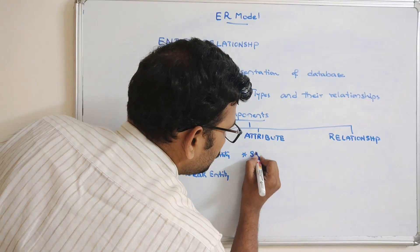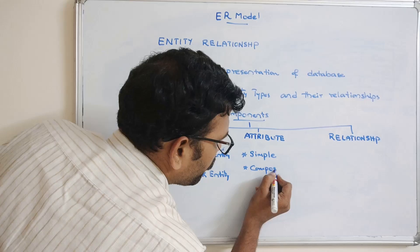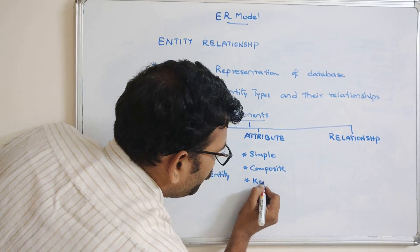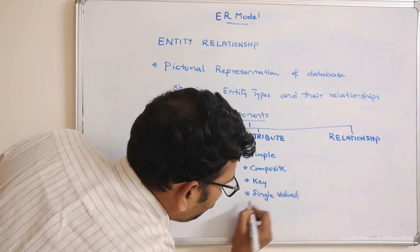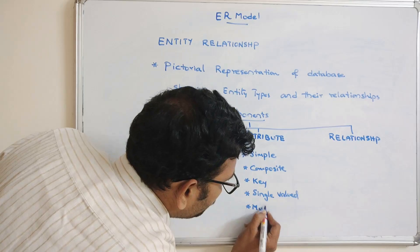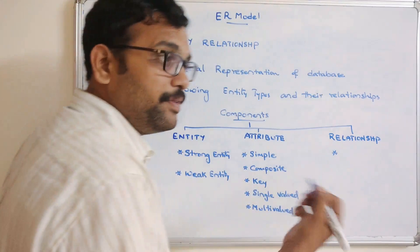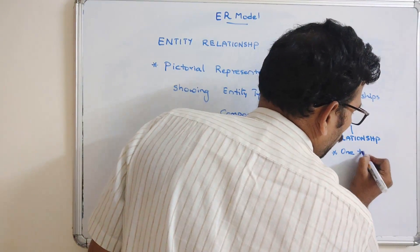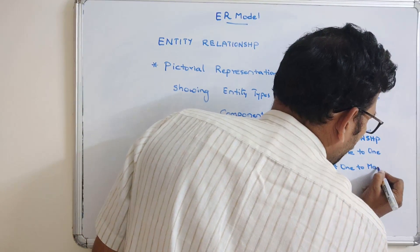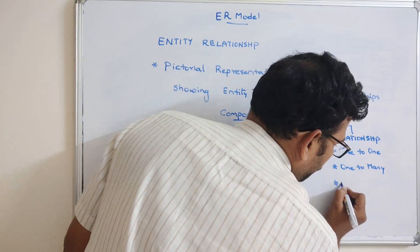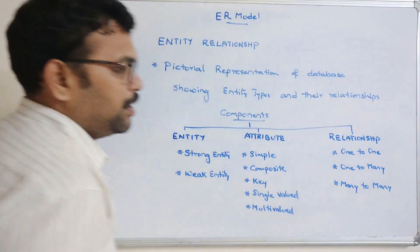Coming to the attributes, we have seen simple attribute, composite attribute, single-value, and multi-value attributes. And for relationships, we have seen in the previous session: one-to-one relationship, one-to-many relationship, and many-to-many relationship. These are the major components of any ER diagram.